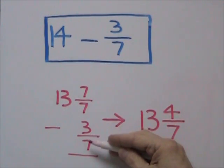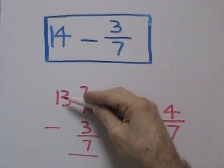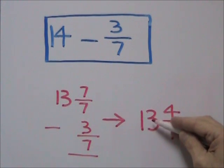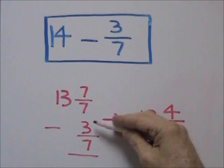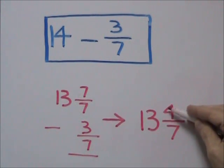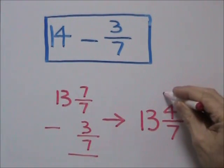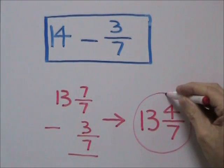We then subtract 3 sevenths. We take our 13, bring it down. Take our two numerators, the 7 and the 3. Subtract 3 from 7 to get 4 or 4 sevenths for a final answer of 13 and 4 sevenths.